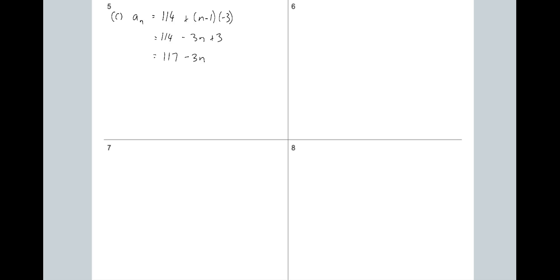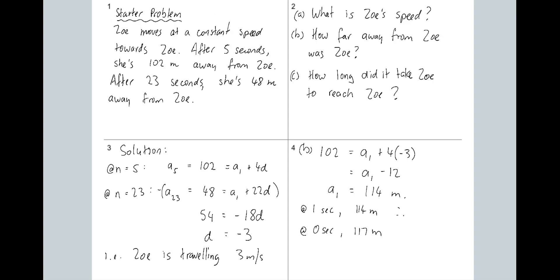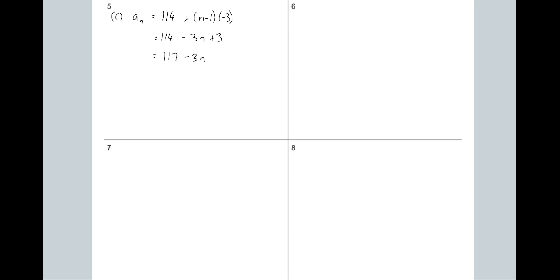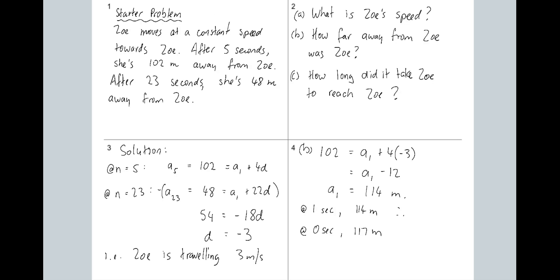How long does it take Zoe to reach Zoe? We want to find n, because n tells us the number of seconds. What can I substitute in? The thing to suss out is the other unknown. A sub n equals zero — good. Because the distance is decreasing, what does it mean for Zoe to reach Zoe? The distance is now zero between the two of them.